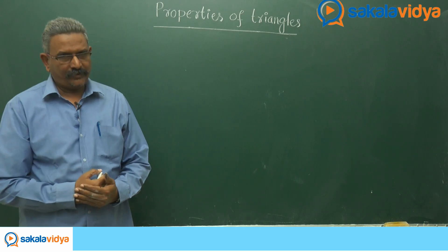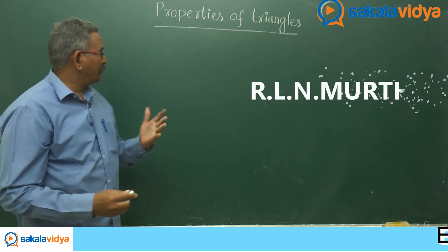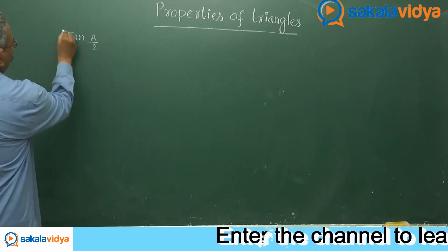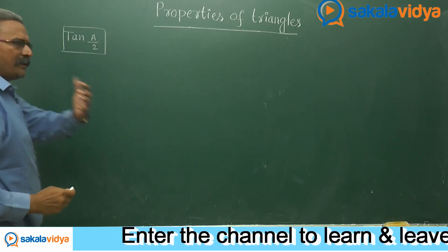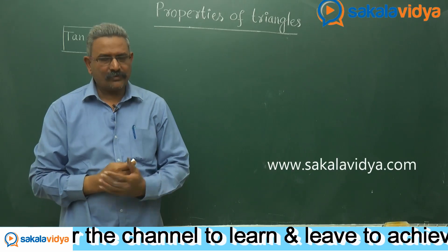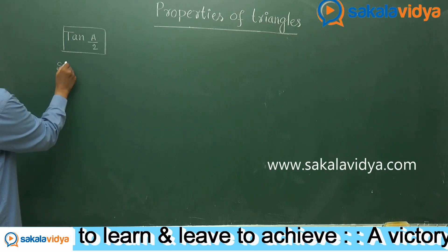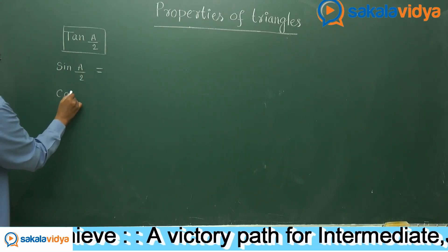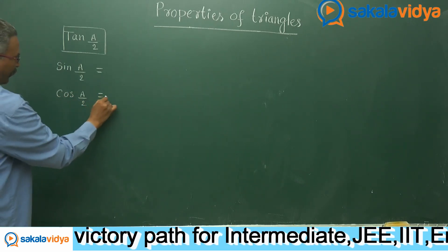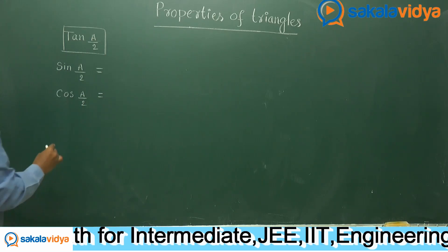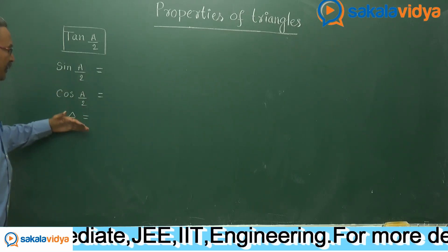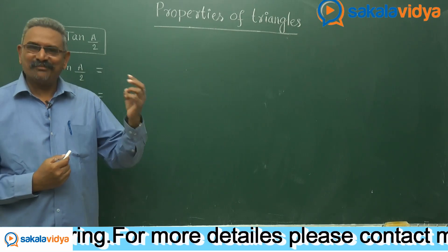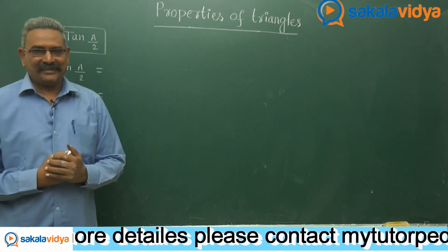Let us formulate one more formula, that is tan(A/2). In order to formulate tan(A/2), let us make a plan. First, we write the sin(A/2) value and the cos(A/2) value. Next we recall the delta formula, that is Heron's formula. With the help of these three, we can easily formulate tan(A/2) in terms of a, b, c, and s — the semi-perimeter.